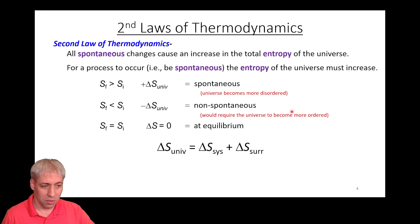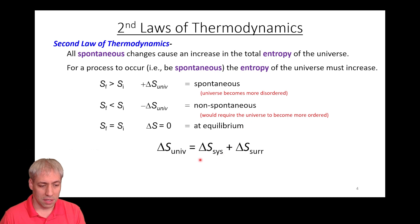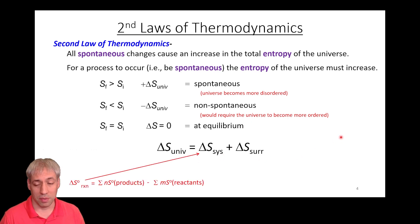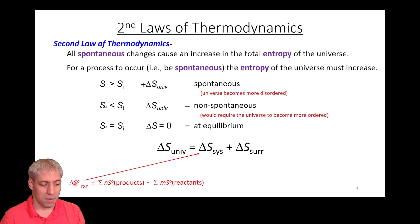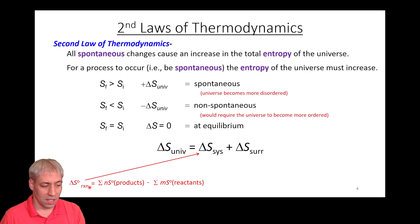In order to do this delta S universe math, we need to know what happens to the entropy of the system and the entropy of the surroundings. If our system is a reaction that's not exchanging matter — a closed system — we can do this math from tabulated values: entropy of products minus entropy of reactants gives us the standard entropy of the reaction, or delta S of the system.